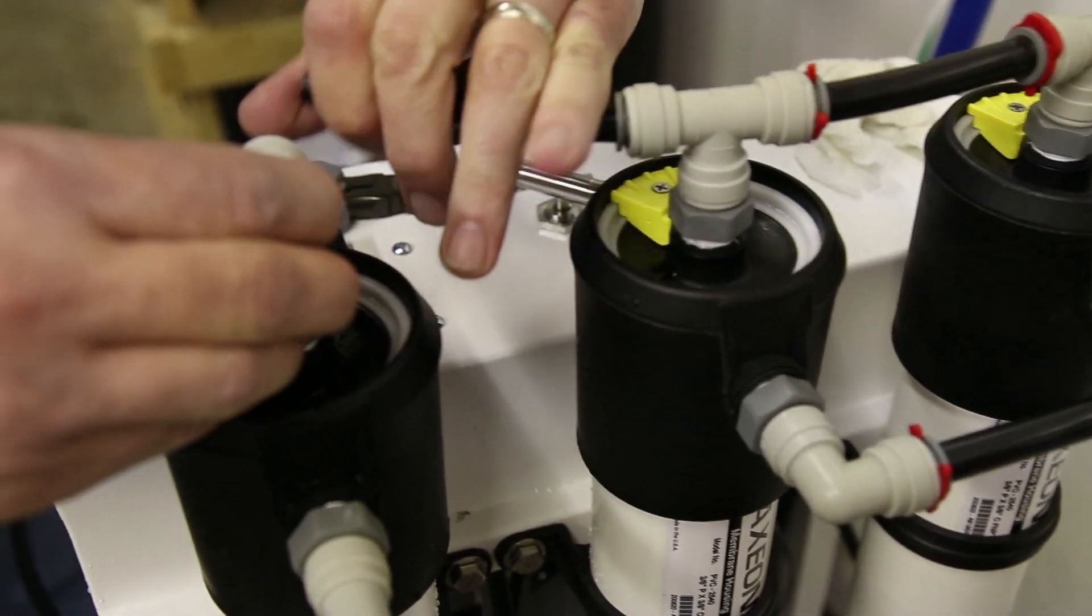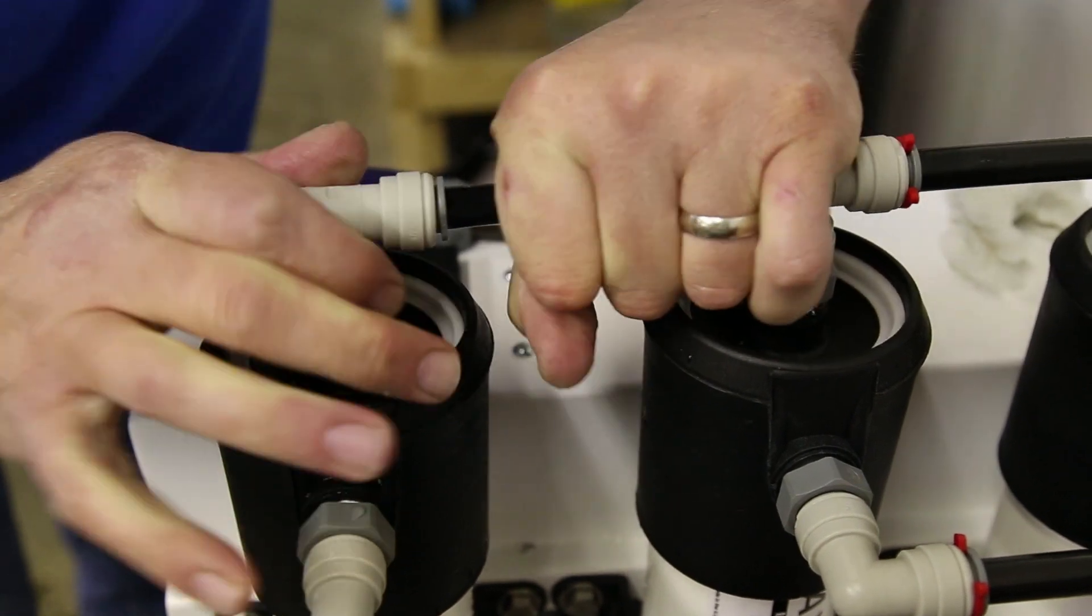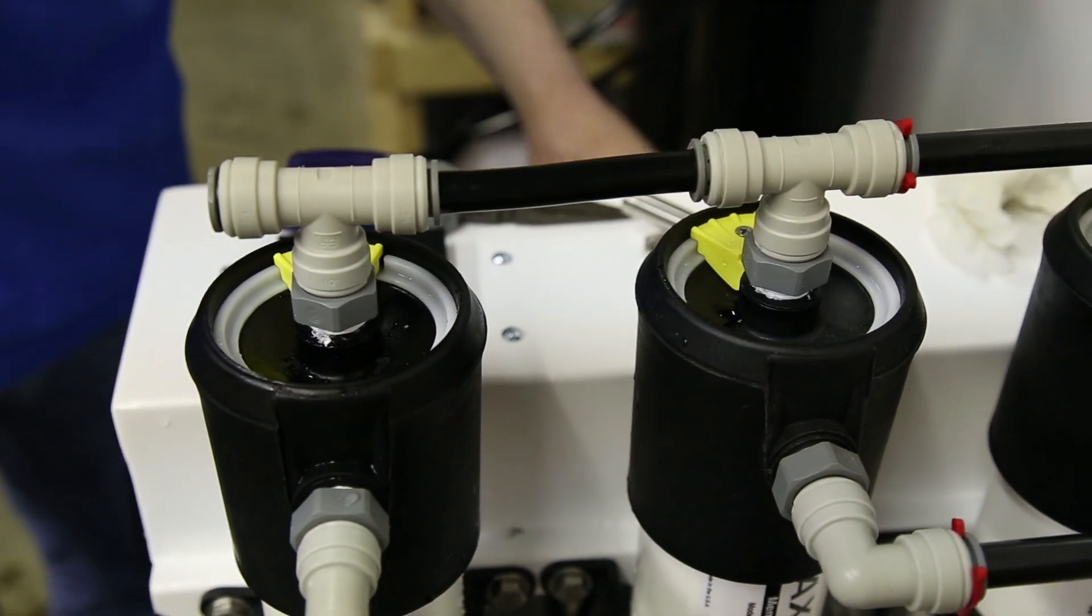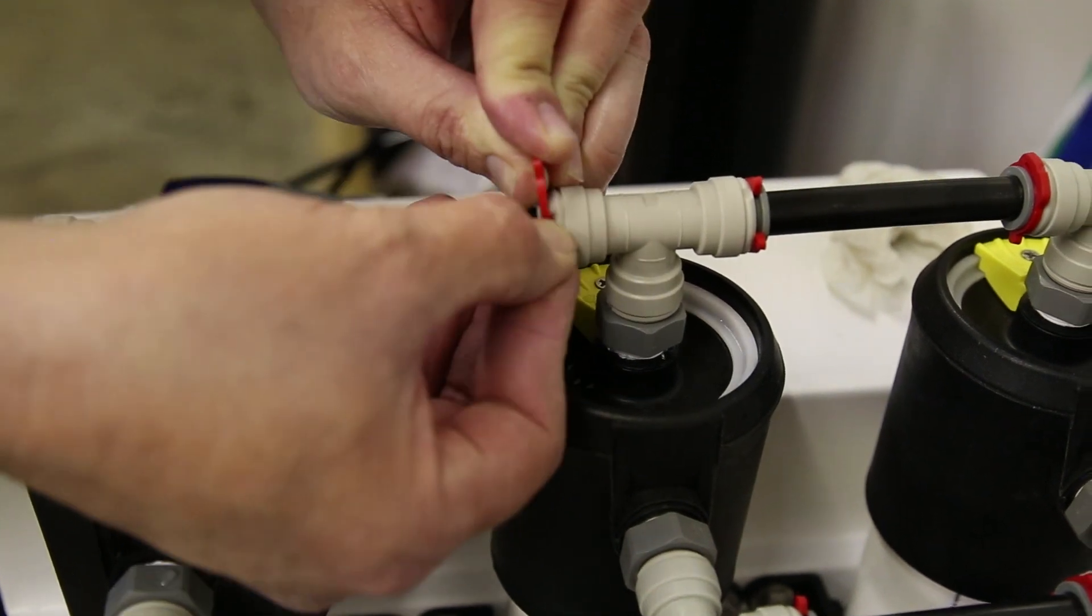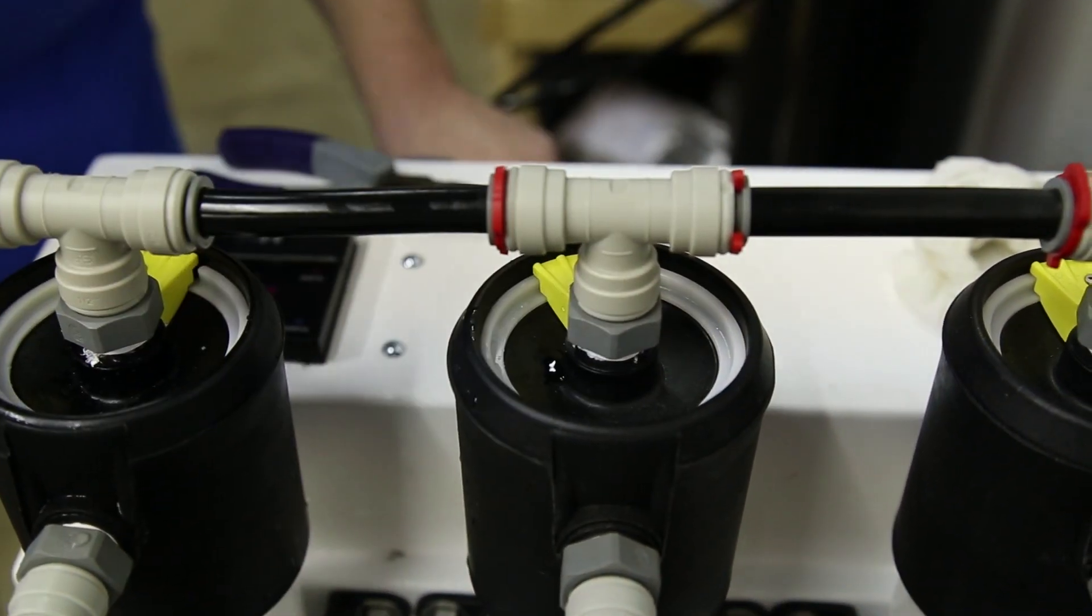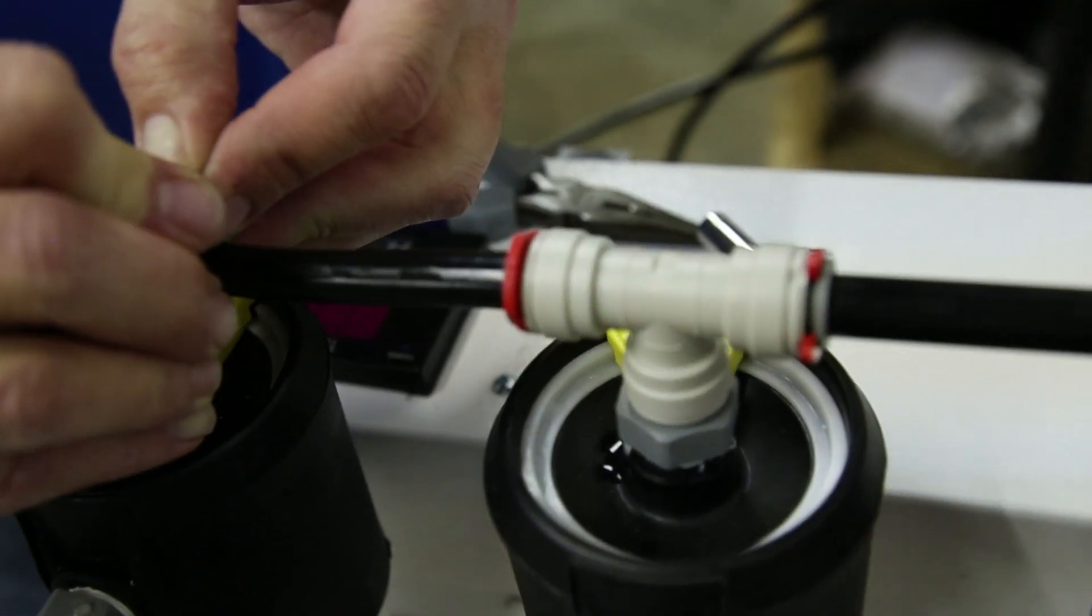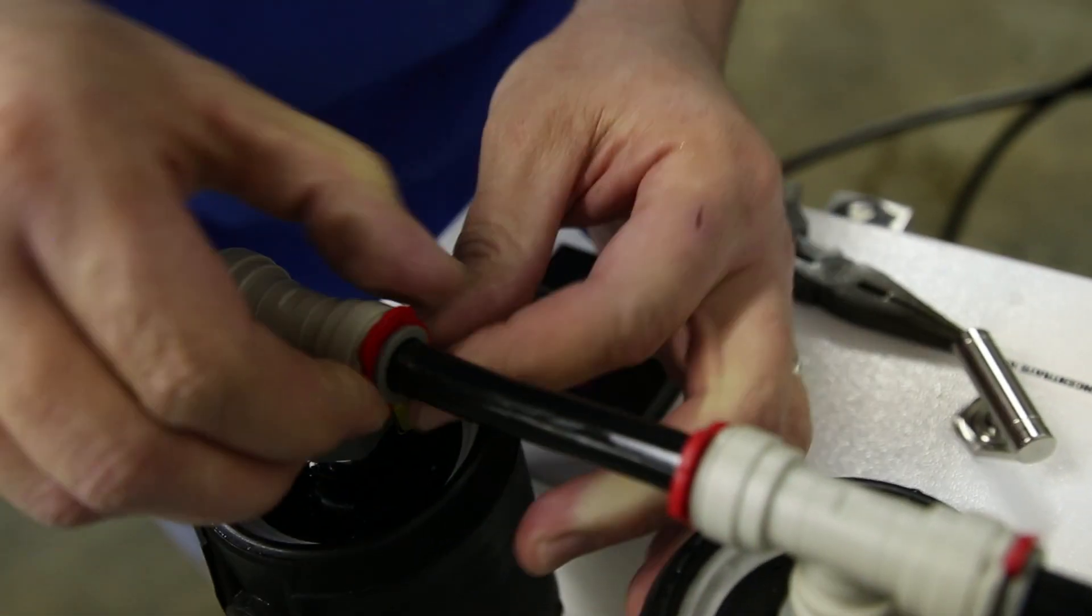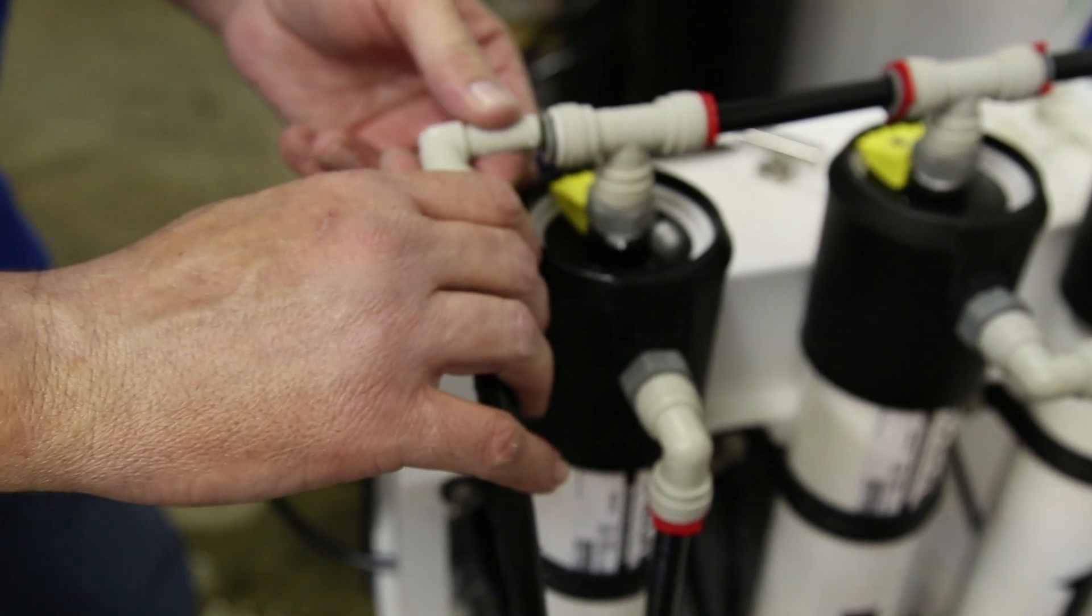Then we'll install our tubing back in there, which is not always easy to get in. It's easier to take all three off at the same time, but for the purpose of this video we did it one at a time. Make sure your line's fully seated in. Go ahead and put our lock clips back in place, and put our final piece back in.